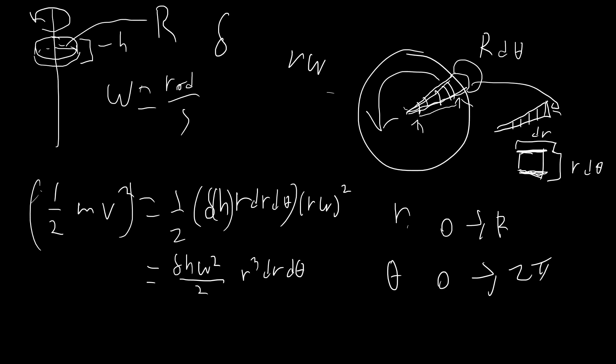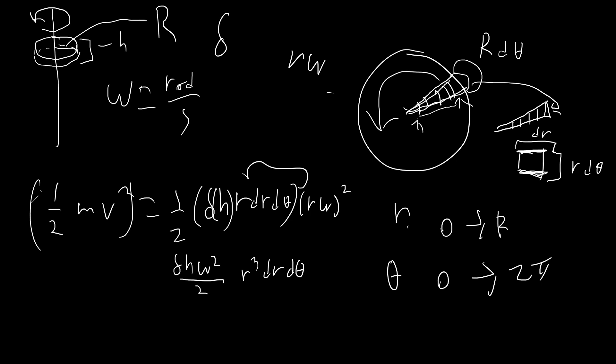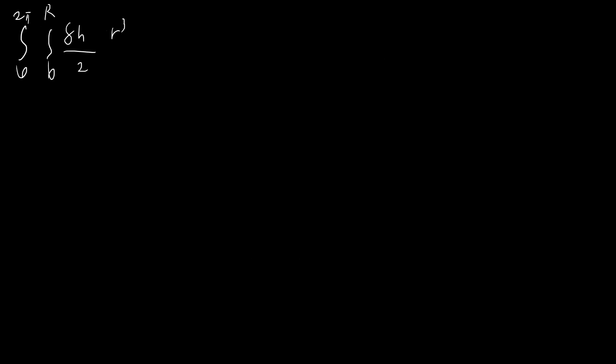This is just the kinetic energy of a tiny little chunk of the disk. We need to sum these all up, so we put a sum here — and as we take the limit, dr and d_theta become infinitesimals, giving us a double integral. The first integral is with respect to r, going from zero to capital R. Theta goes from zero to two pi. So we have the double integral of delta * h * omega² / 2 times r³ dr d_theta.